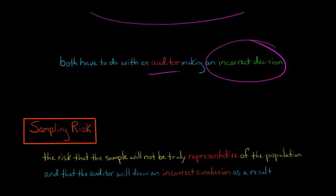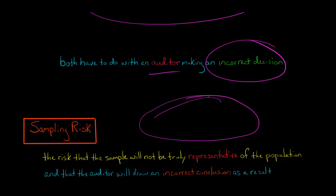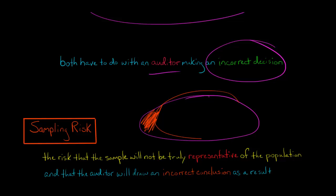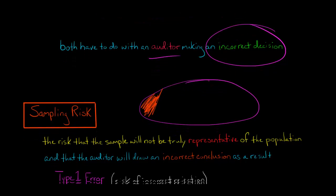Let me give you an example. Let's say that you're looking at accounts receivable — here's our population, all the different accounts receivable accounts. But then we just draw a sample of the accounts receivable accounts, and we're trying to see if they've been overstated. If this sample is not representative of the entire population, as the auditor, we can make the wrong decision.